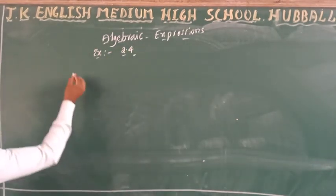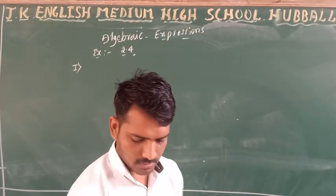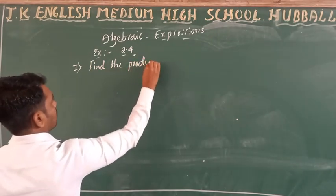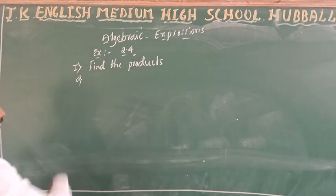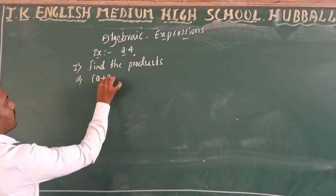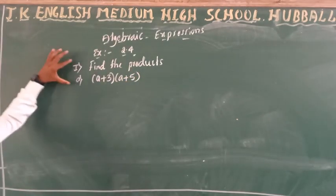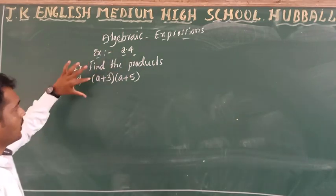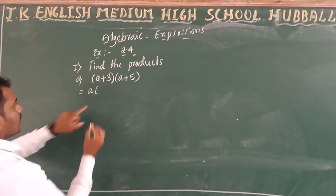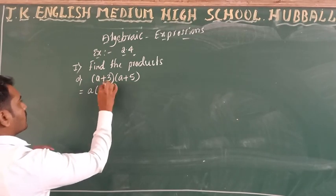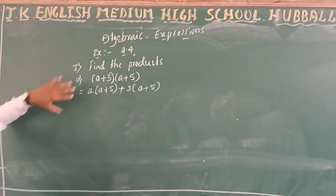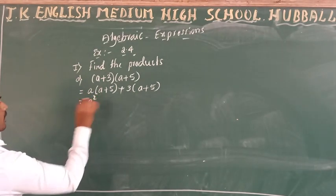The first question is: find the product. The question is (a + 3) into (a + 5). For this, you need not apply any conditional argument — directly write the solution. First write 'a' outside, then a plus 5 inside; next write plus 3, then a plus 5. Multiply: a into a gives a squared, a into 5 gives 5a.